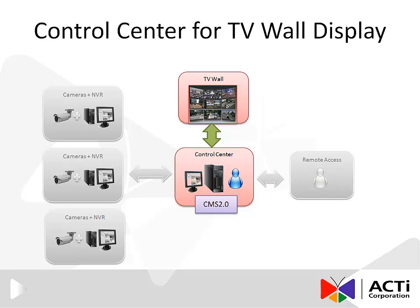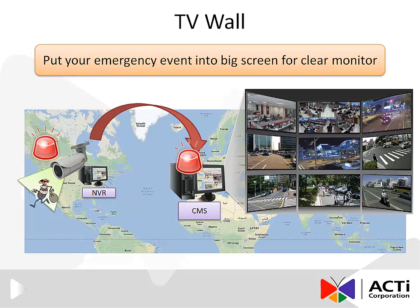The third key objective of the CMS 2.0 is the use of the TV wall. With the TV wall, an operator in the control center can relocate and focus a channel of interest quickly on a large screen. This reduces critical response time for any emergency that may take place.